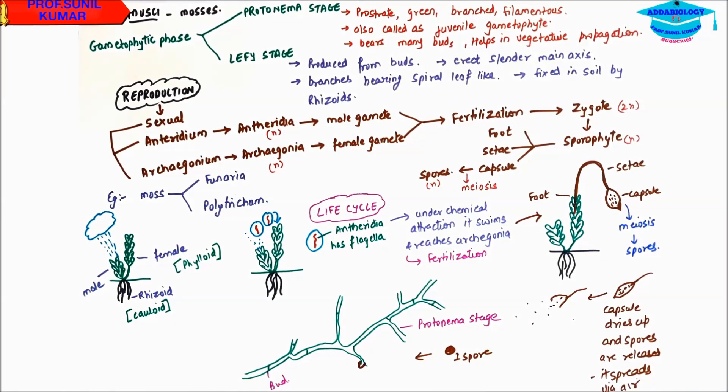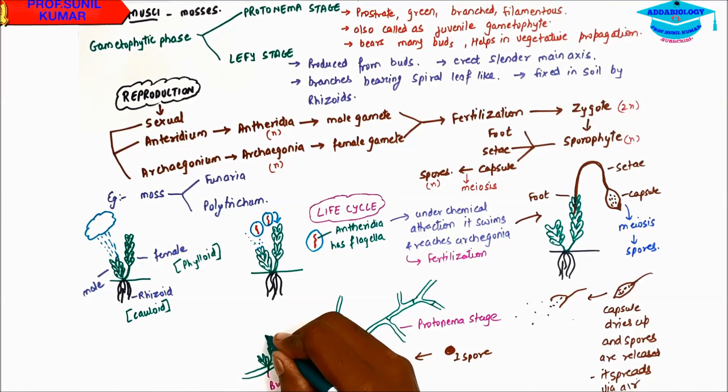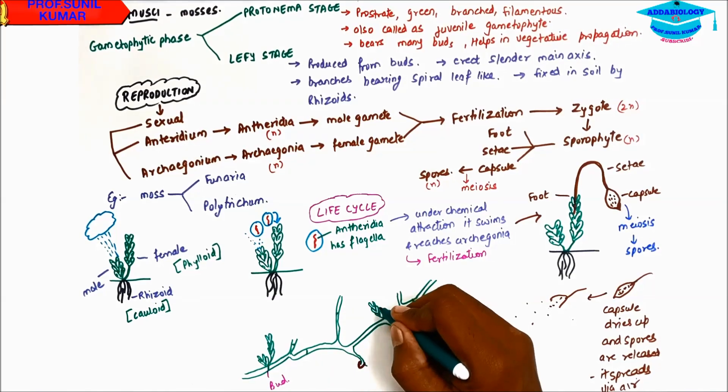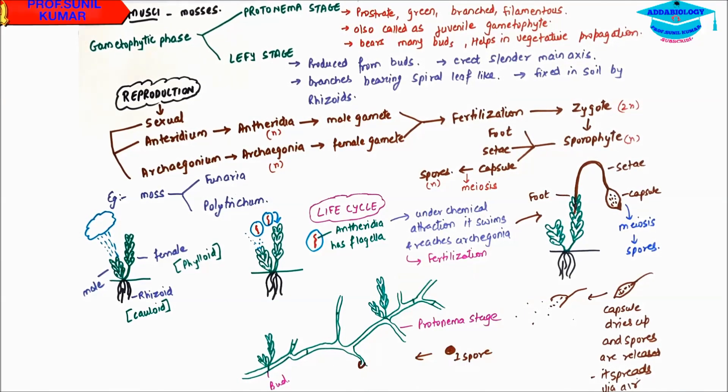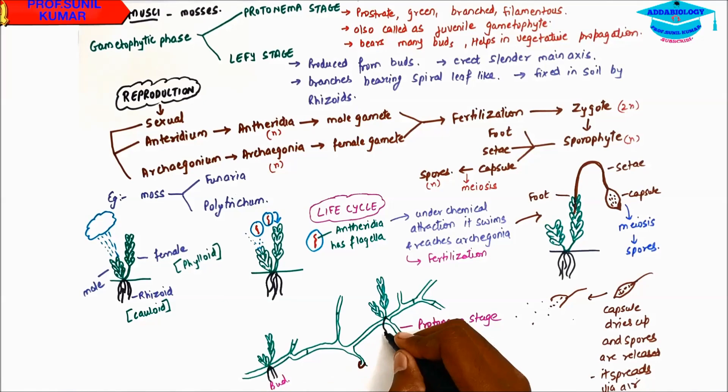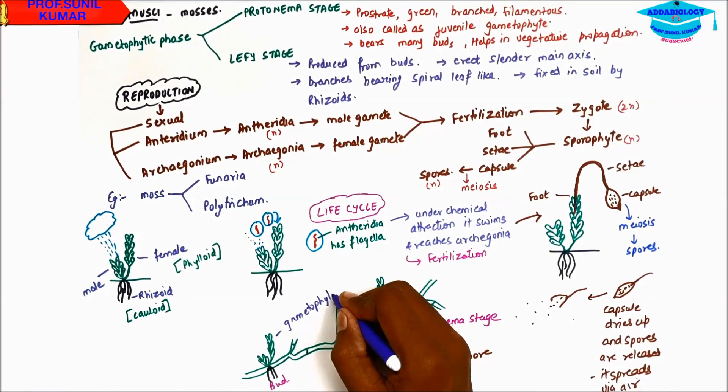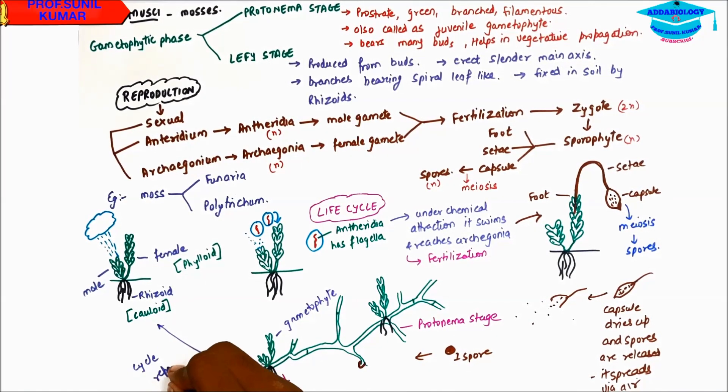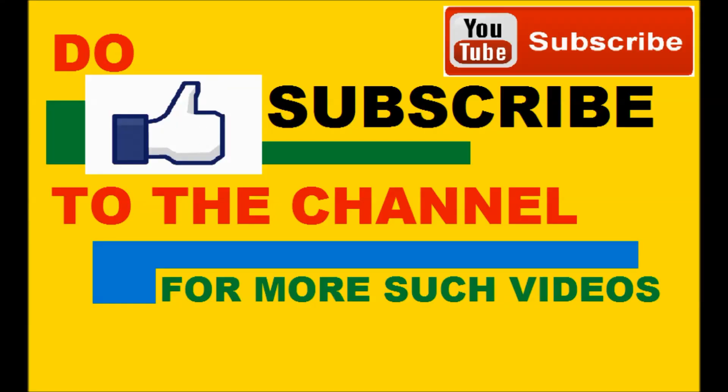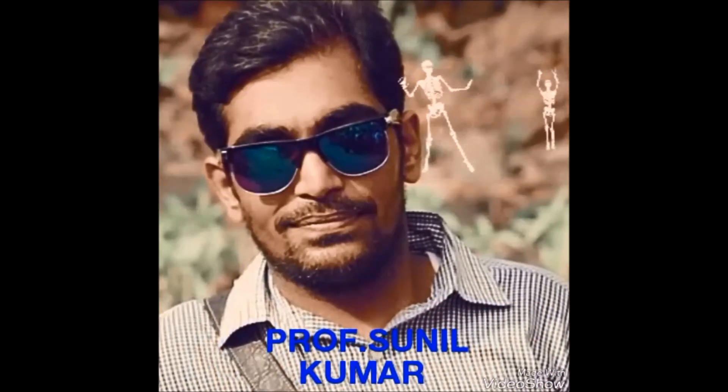It has many buds actually. These buds will give rise to the male and the female gametophyte again. So this male and female gametophyte will develop at many places on the protonema stage. And again when the water falls on these gametophytes, the cycle repeats again and fertilization takes place. Hope you have understood the concept. Do subscribe to the channel and give a like for the video of Bryophyta. Thank you very much.